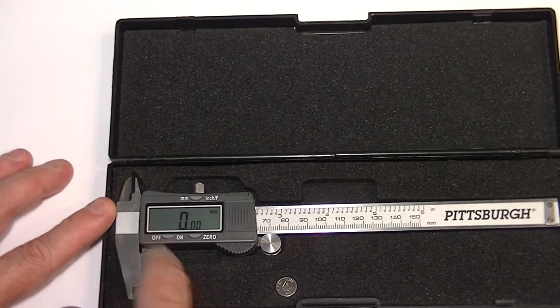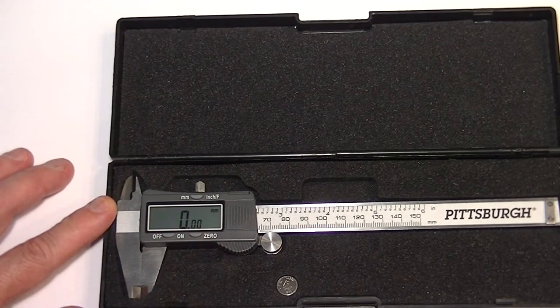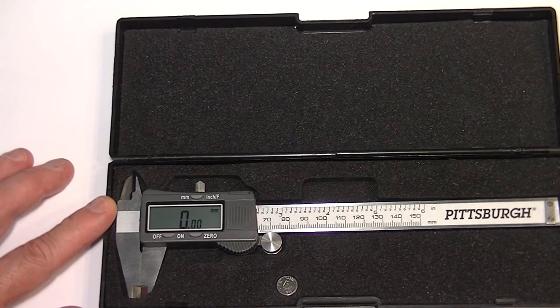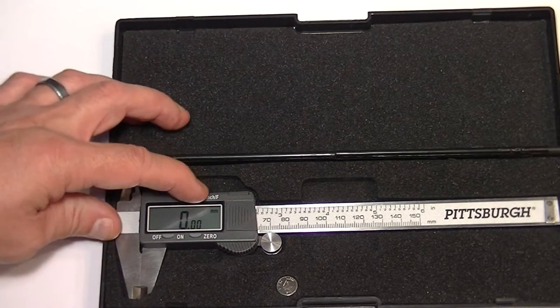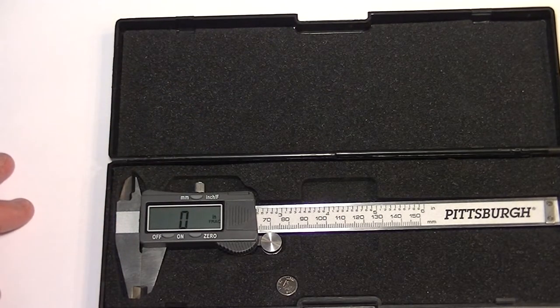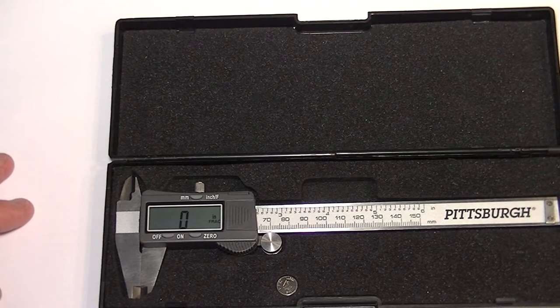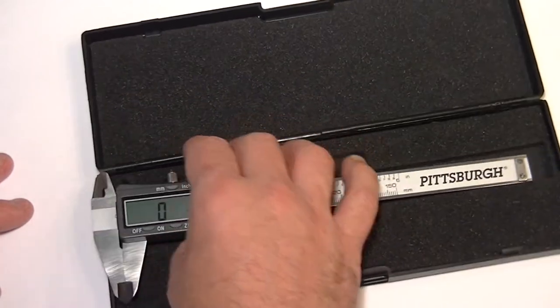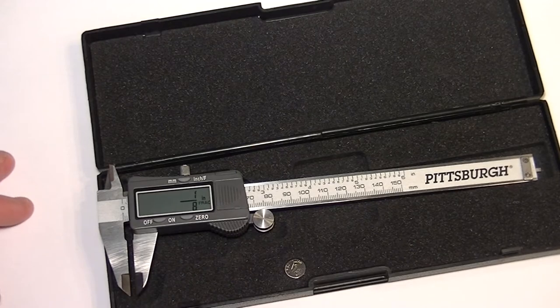Features are on and off. Zero button to zero it to wherever you want, usually at the top of a closing. You have millimeters, inches, and inch fractionals. So it's pretty neat in the way that it will display SAE and metric settings as you can see.